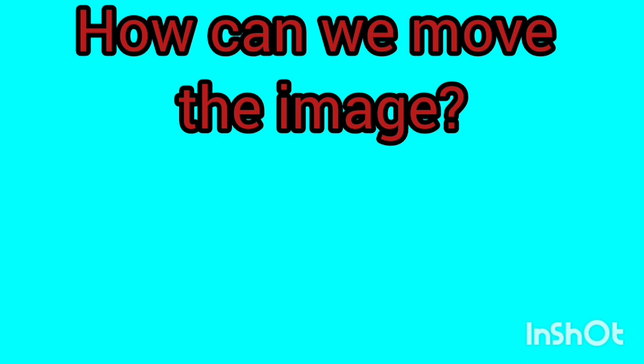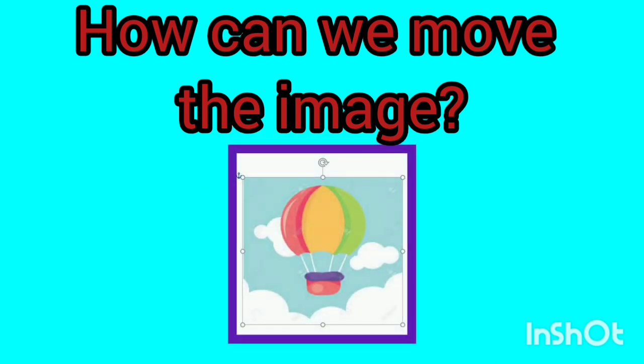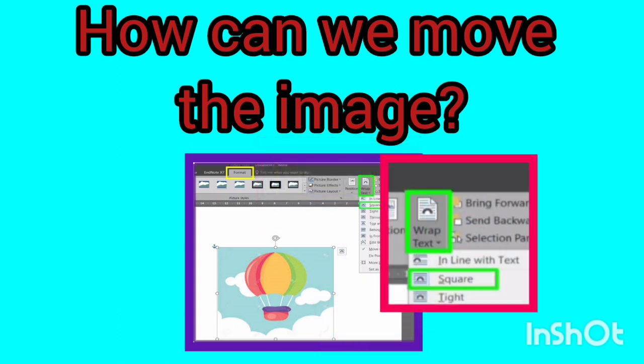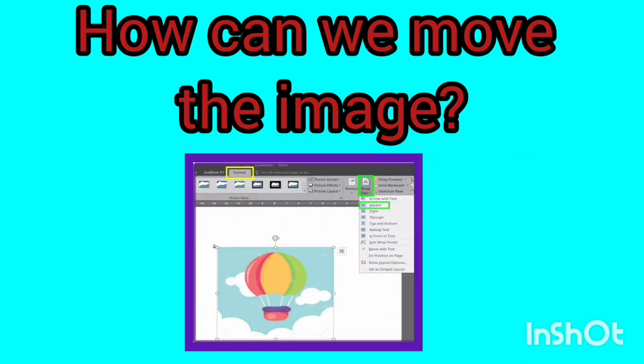We want to learn how to move the image. Click on the desired photo once to select it. The Format tab marked with a yellow box will be activated automatically. Then click on the Wrap Text icon marked with a green box and select the Square option from the menu. Place the mouse on the photo — when the mouse pointer turns into a 4-way arrow, you can move the image. I put the photo in the middle. Where did you put your photo on the page? Write me in the comments.